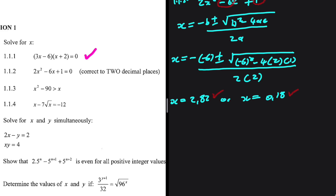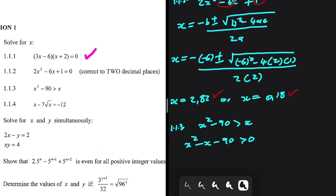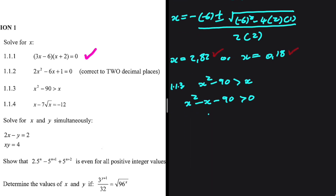Let's take a look at 1.1.3. We have x squared minus 90 being greater than x. Let's take x to the left-hand side. We're going to have x squared minus x minus 90 being greater than 0. At this point, what you want to do is find your critical values. We let x squared minus x minus 90 equal to 0 and factorize.